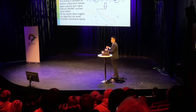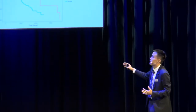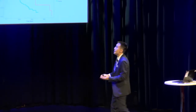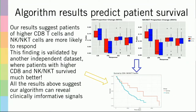To validate that discovery from our algorithm, we use another independent cohort consisting of around 200 different patients. We use our algorithm to estimate their CD8T cell and natural killer cell fractions and stratify them into a higher group — the red curve — and a lower group — the blue curve. As you can see, when they actually get started in treatment, the red curve group actually did survive much better than the blue curve group, which suggests that the findings from our algorithm are also very valid in real clinical practice.